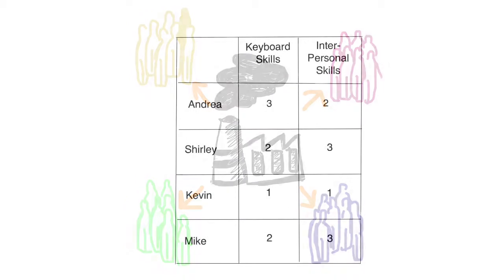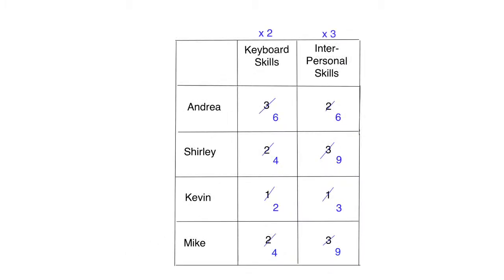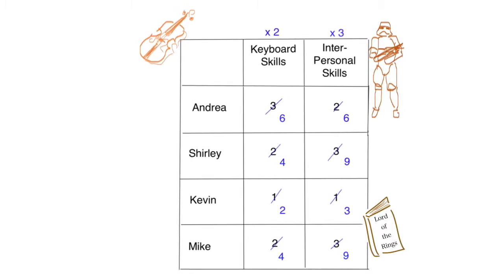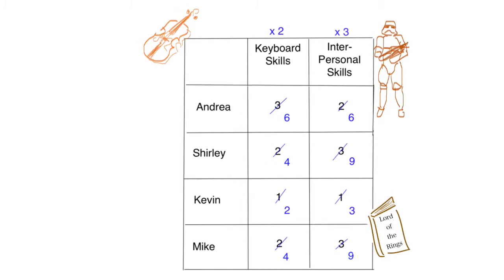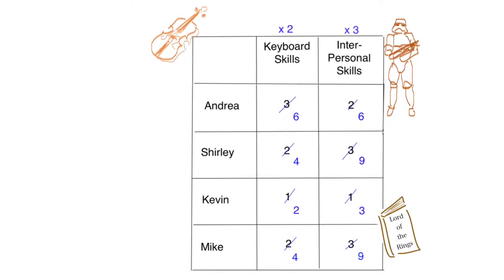Step 6. Narrow down all applicants to a sensible shortlist using your evaluation frame and scorecard. To do this, you might want to weight some criteria more than others, to represent the importance or significance of that factor. If there are still too many applicants with equal scores, do not use a non-relevant tiebreaker — e.g. they play the violin, or have read Lord of the Rings, or are a Star Wars fan like you. If you need a tiebreaker, then either re-evaluate the weighting of the scores, or choose randomly.